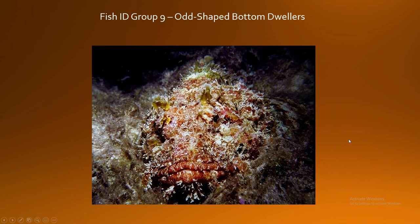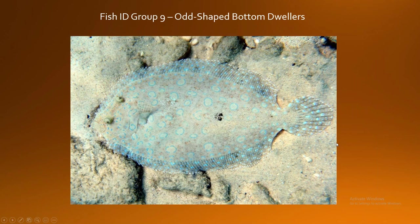Any guesses as to what we've got here? Yes — spotted scorpionfish. I'm using my mouse to circle its left eye, right eye, and there's its mouth. Next species — peacock flounder, good job. You're able to see its eyeballs, and as was pointed out, those would be called ocellated spots. Nice work, everybody!